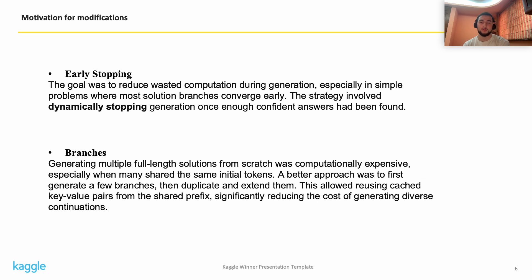Regarding my modifications, the main goal was to avoid unnecessary computation. In many cases branches would converge early to the same answer, so continuing to generate tokens beyond that point was inefficient. Introducing early stopping helped prevent this waste. Another issue was the cost of generating each branch from scratch. Instead, I generated a few initial branches and then duplicated and extended them, allowing me to reuse cached key-value pairs from the shared prefix, reducing the cost of generating diverse completions.